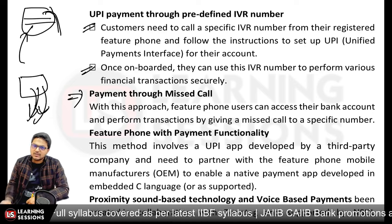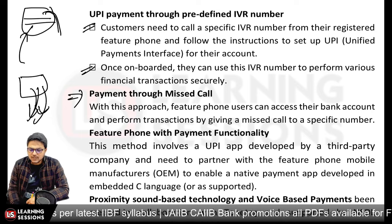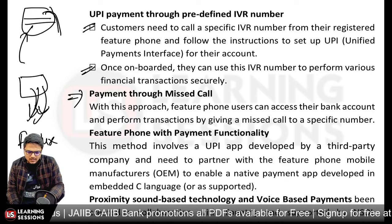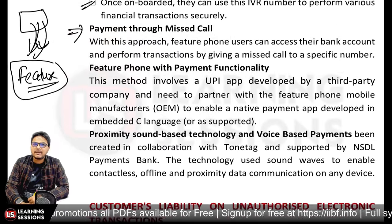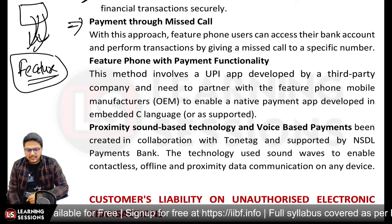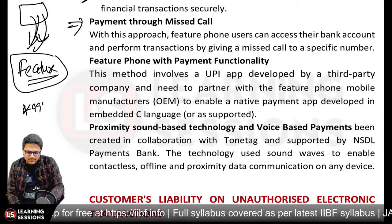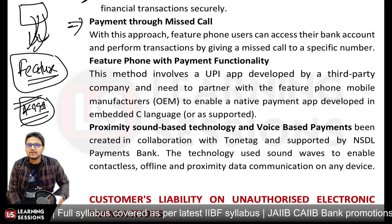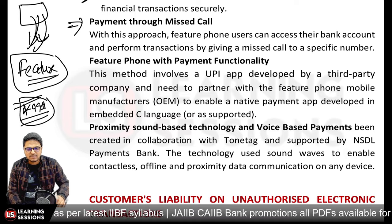With UPI123Pay, feature phone users can access bank accounts and perform transactions by giving a missed call — calling a number to receive account or last transaction statements. Feature phones with payment functionality can also use third-party developed applications integrating *99# features, allowing access to all banking services as a mobile application on the feature phone.